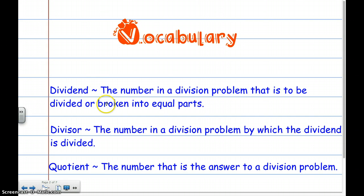Dividend: This is the number in a division problem that is to be divided or broken into equal parts. Divisor: This is a number in the division problem by which the dividend is divided. Quotient: The number that is the answer to a division problem.